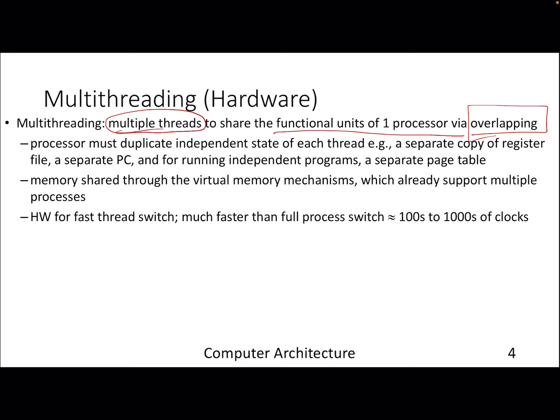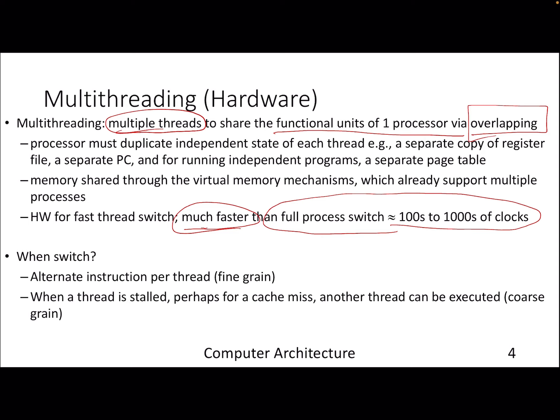Depending on the area budget, energy budget, power budget, and overall performance improvement, the trade-off decision of whether to overlap accesses from multiple threads for a given functional unit or to duplicate the functional unit should be made. Since it is hardware-based multi-threading, thread switching is actually much faster compared to what you have learned in your OS course — we are still in the hardware zone, dealing with nanoseconds. With that, let's look at some hardware multi-threading approaches that improve thread level parallelism.